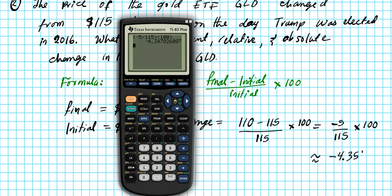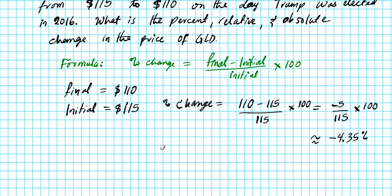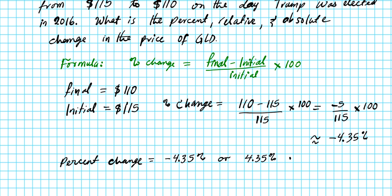So the percent change is approximately negative 4.35 percent, or we can say there was a 4.35 percent decrease in the price of GLD on the day that Trump was elected.